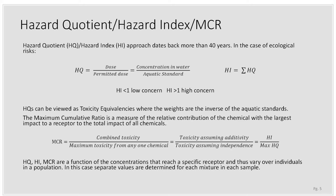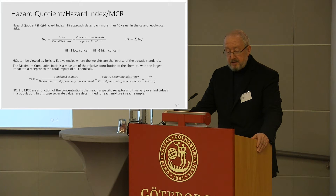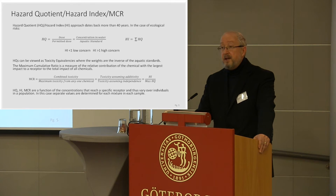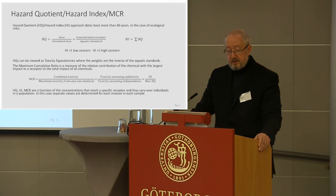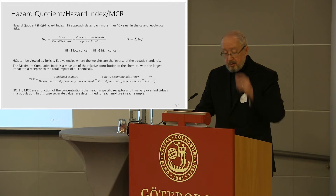Let me give a little refresher on the maximum cumulative ratio and the techniques that feed into it. The hazard quotient hazard index approach has been around for more than 40 years for things like industrial hygiene standards and setting soil standards at Superfund sites. It has a long history of use, and as we heard Marco speak, for the last 20 years it's been used in ecological effects. The hazard quotient is basically taking the dose and dividing it by a permitted dose, or in this case a concentration in water divided by an aquatic standard, then summing them together to develop a hazard index. If you have a value of less than one, you have low concern; greater than one, you have higher concern and probably need to do something.